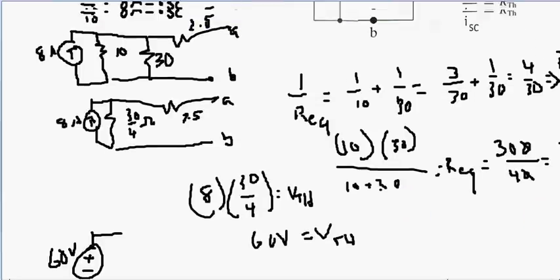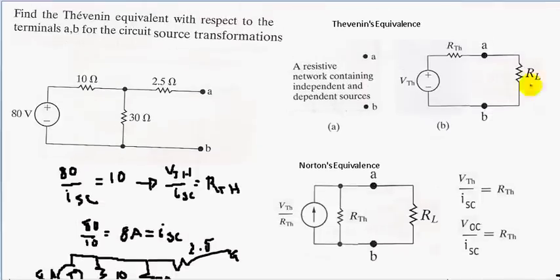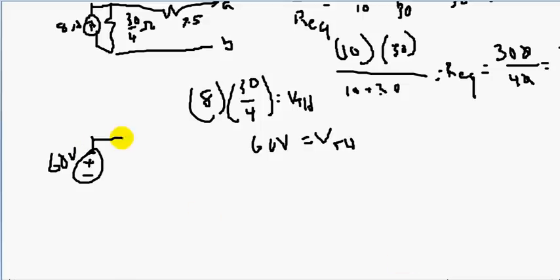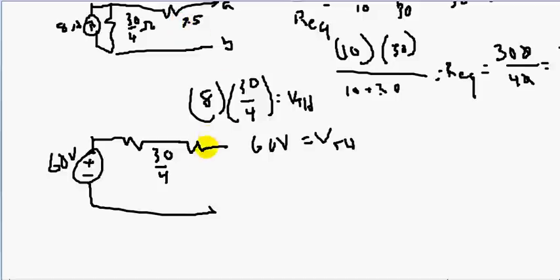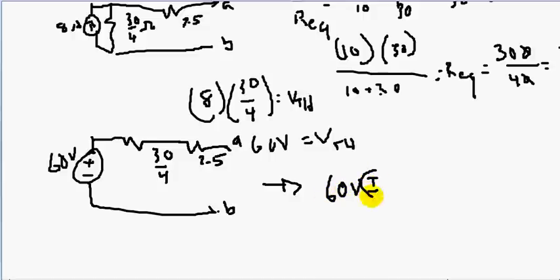Remember, when converting from Norton's to Thevenin's equivalent, the resistor is now in series with the voltage source. The resistor is 30 over 4 ohms, and it is in series with our 2.5 ohm resistor. Since they are in series we simply add them: 30 over 4 plus 2.5 equals 10 ohms. So we have 10 ohms, and that gives us our Thevenin's equivalent.